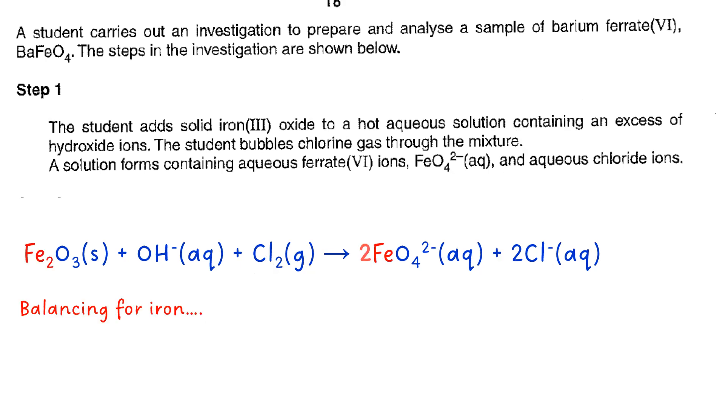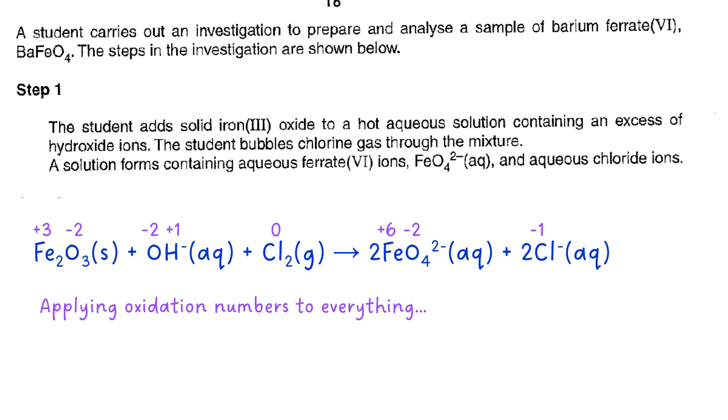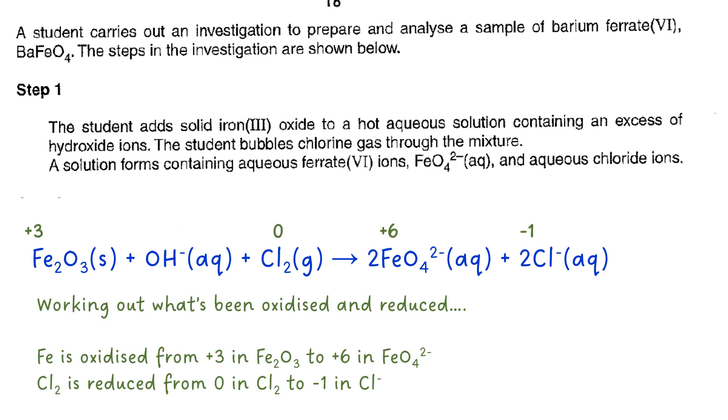The first thing to do is to look at the Fe2O3, that means that you'd have two lots of FeO4^2- on the right hand side. In order to balance this equation you really need to use oxidation numbers, so to start off with apply oxidation numbers to everything and then ignore the things where there hasn't been a change in oxidation numbers, which will leave you with the oxidation and reduction. So the iron is oxidized to plus six from plus three and the chlorine is reduced from zero to minus one.